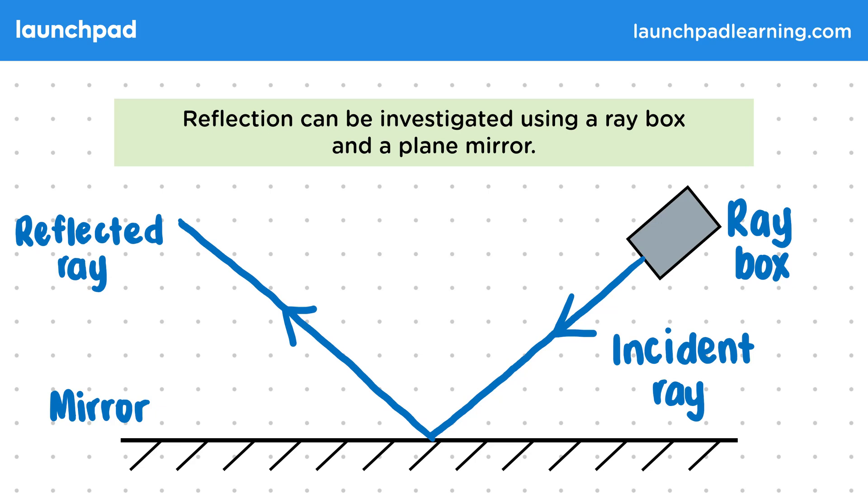Now how do we describe the directions of these two rays mathematically? Well, to answer that we should first look at what we mean by a normal to a surface.